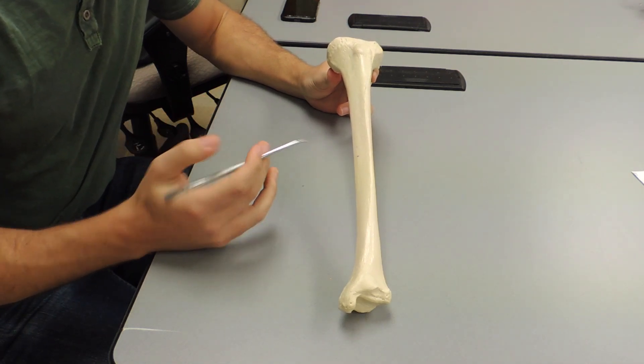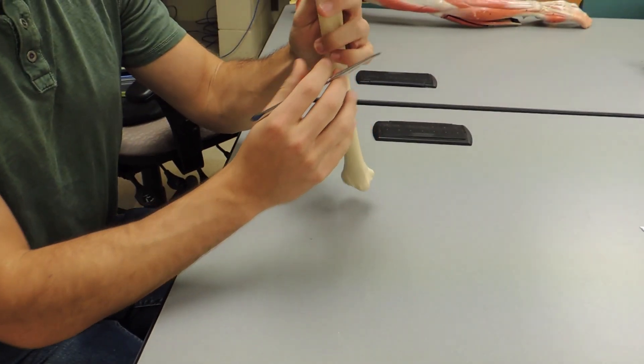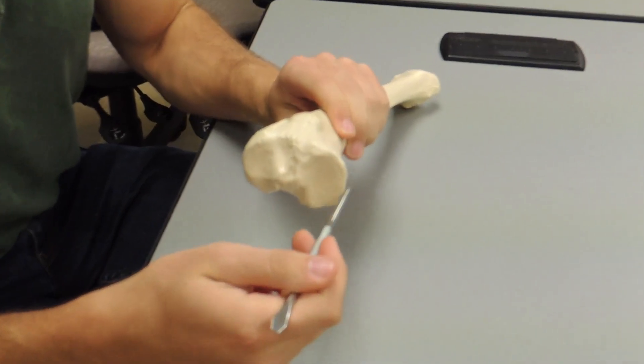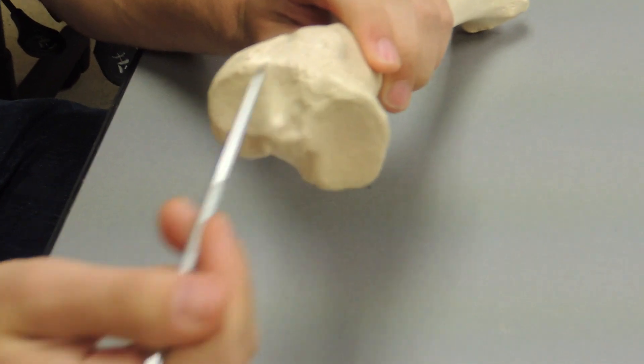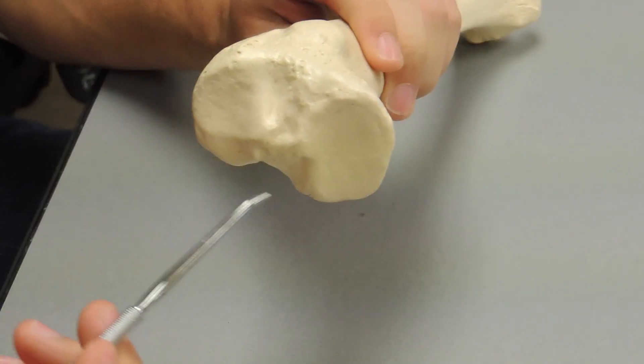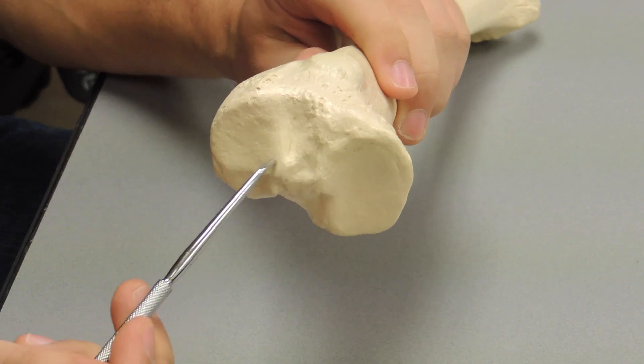So these are the landmarks of the tibia. Start at the top, you have your condyles, you have your medial condyle, you have your lateral condyle, and in between the two, you have your intercondylar eminence.